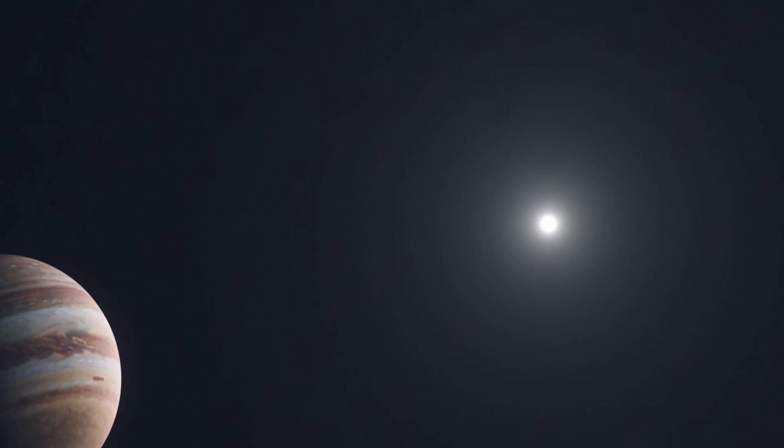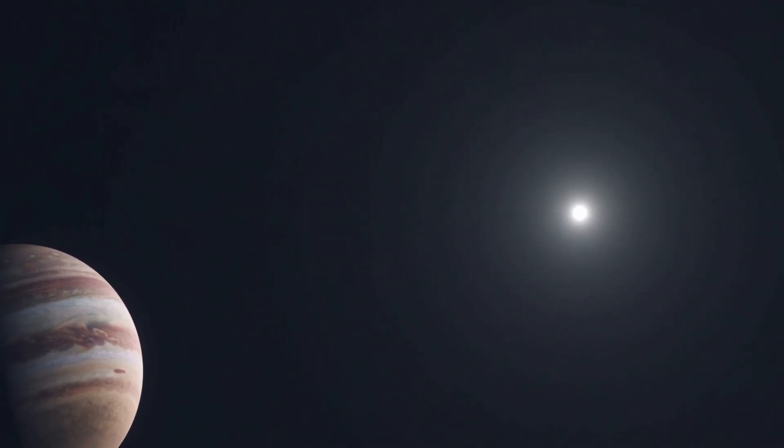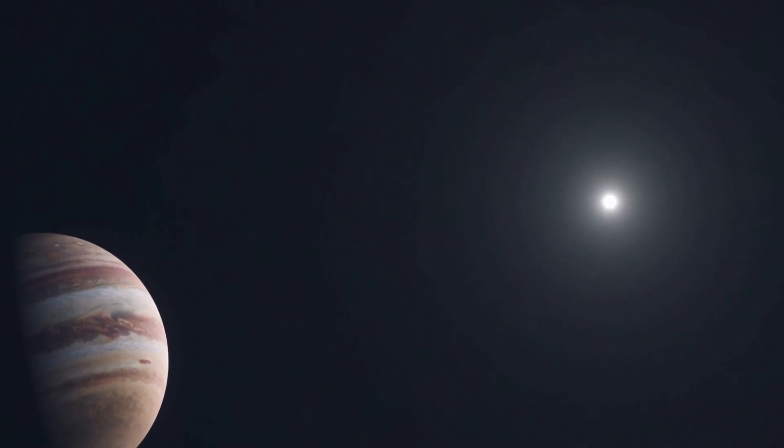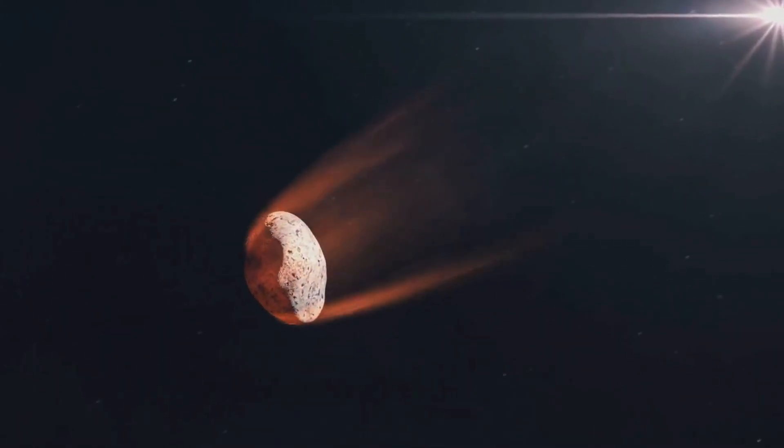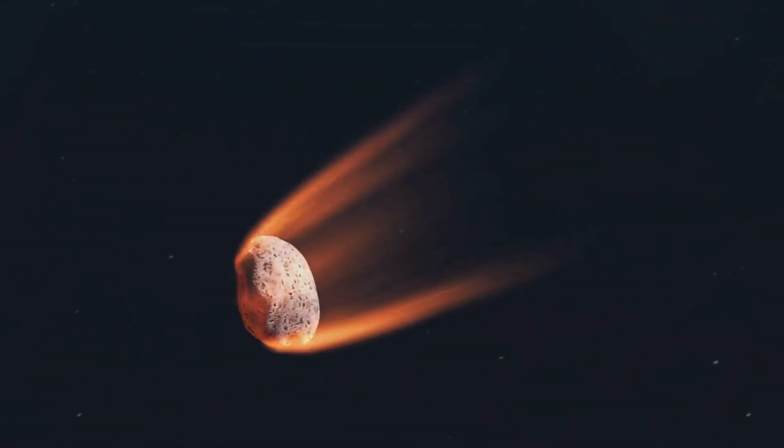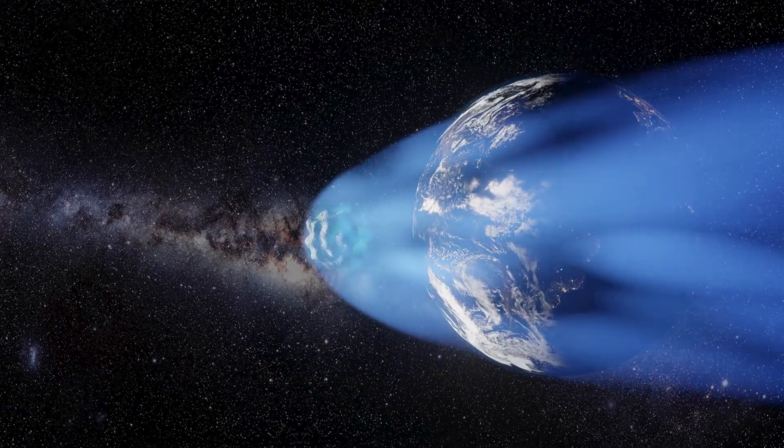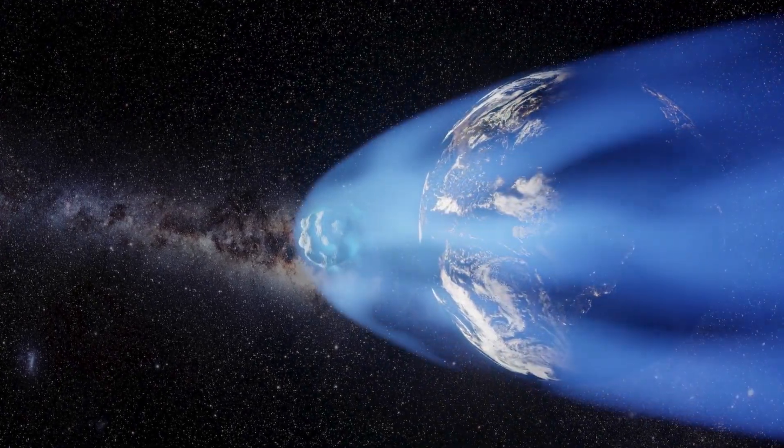Second, that coma formed way out beyond Jupiter, over 5 astronomical units from the sun, where it's too cold for typical water ice comets to start sublimating. Most comets wait until 3 to 4 astronomical units to wake up. So, what was going on?